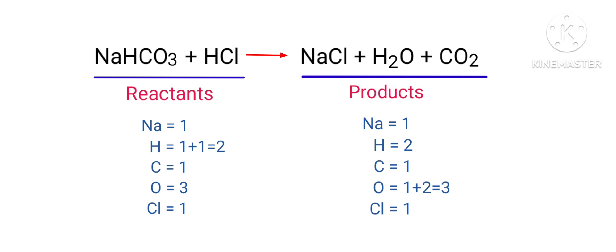If you observe this equation, the number of atoms on the reactants side are the same as the number of atoms on the products side. There are one sodium atom, two hydrogen atoms, one carbon atom, three oxygen atoms, and one chlorine atom on both sides. So we don't need to balance this equation because it is already balanced.